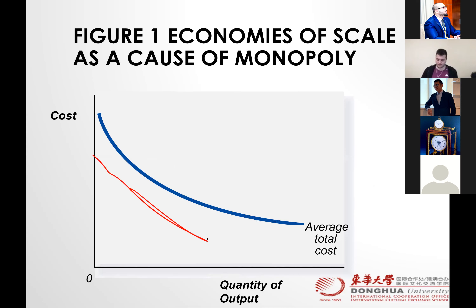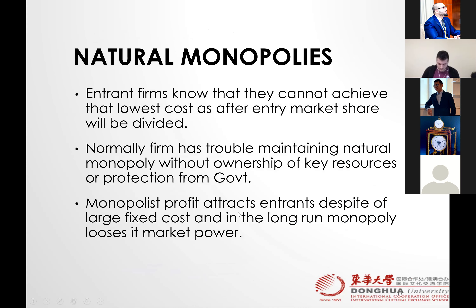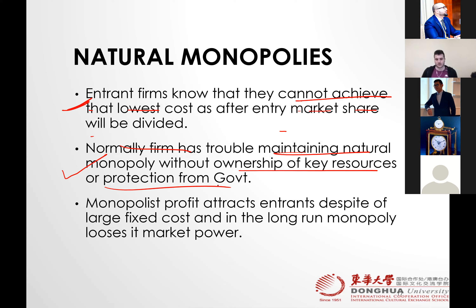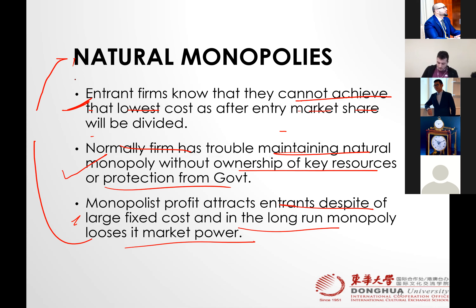In natural monopoly, when one firm stays on its economies of scale, it manages to reduce its cost to the lowest level for a longer period, driving out competition and remaining as the sole distributor. Entering firms know they cannot achieve the lowest cost because after entry, market share will be divided. Firms have trouble maintaining natural monopoly without ownership of key resources or government protection — new technology may allow other companies to produce more cheaply and enter the market.